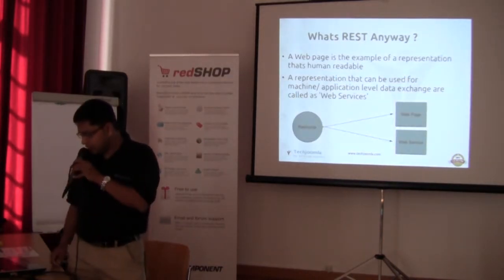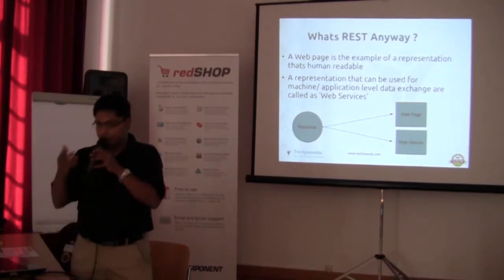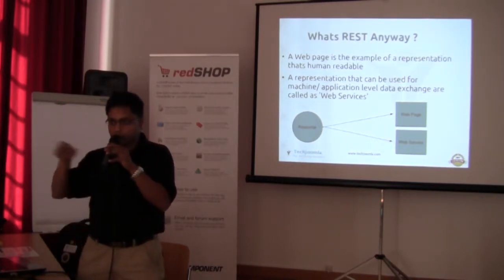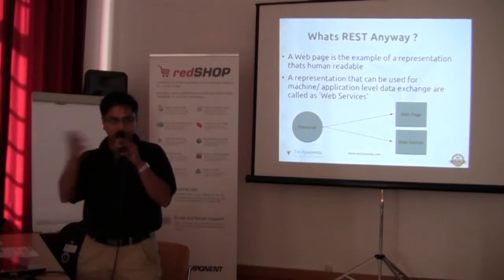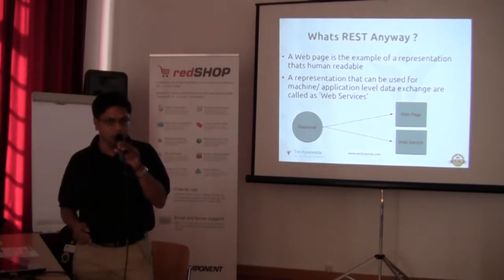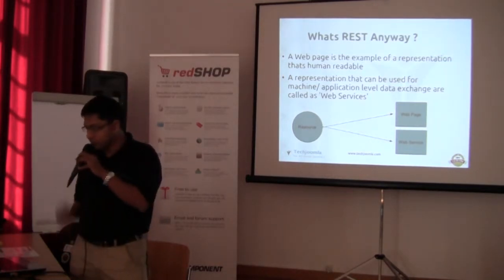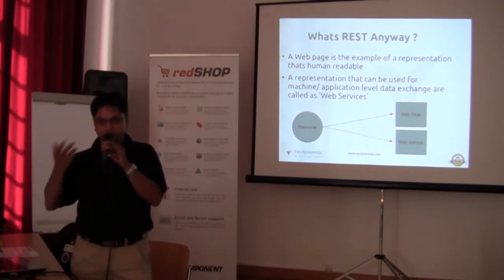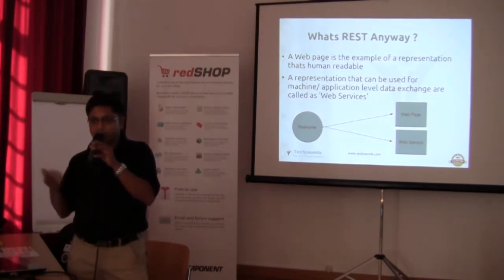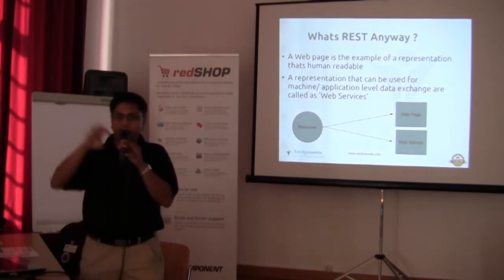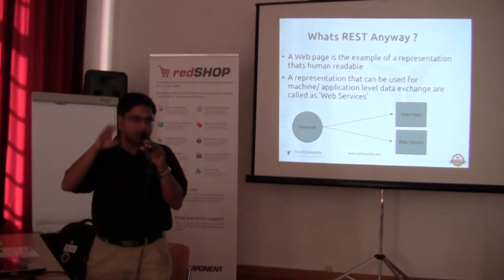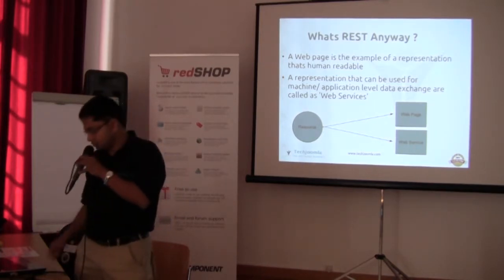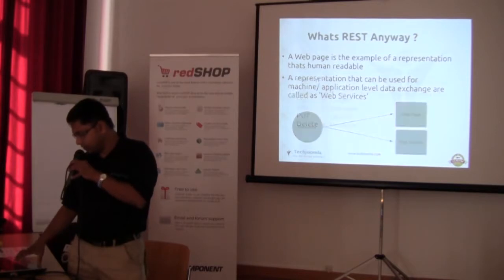As an example: a web page — if you go to Joomla.org and see a list of news items, that list is readable by you, so that's a human representation of the list. Whereas if you click on RSS, RSS is in a way REST because it renders the list of articles in a different format. That's the difference.